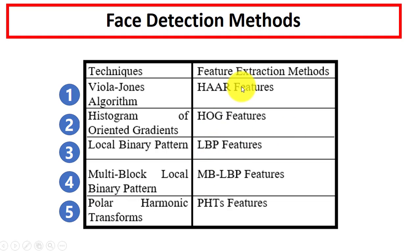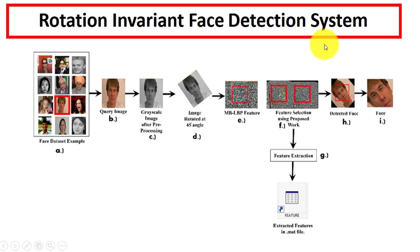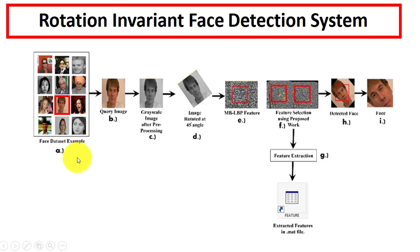You can see the list of facial feature extraction methods for these different techniques. Next is the rotation invariant face detection system. This is our proposed model created for the detection of rotated digital images. First we have a face database containing different types of images. From the database we select a query image, on which we perform pre-processing. After pre-processing, we select the angle of rotation.